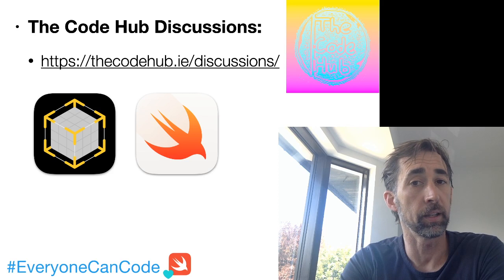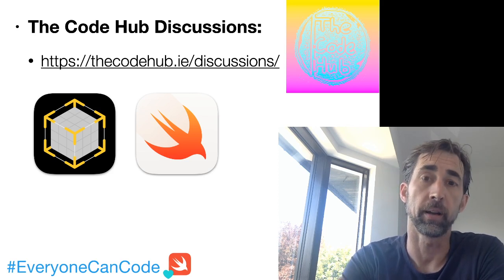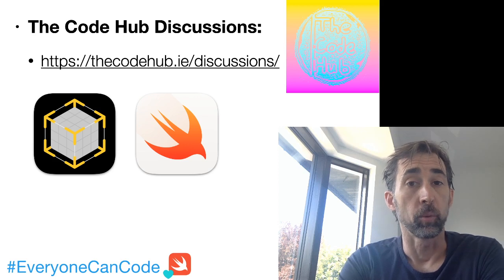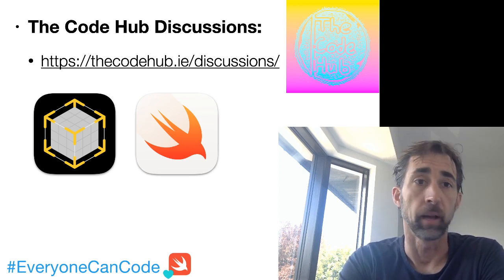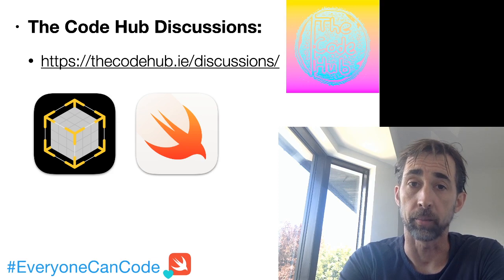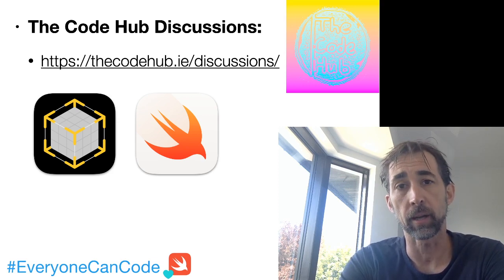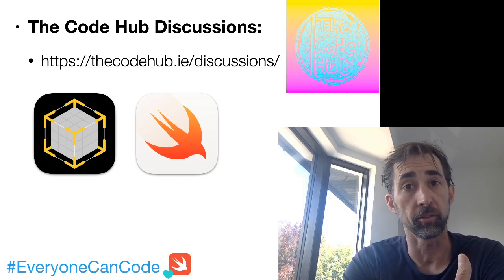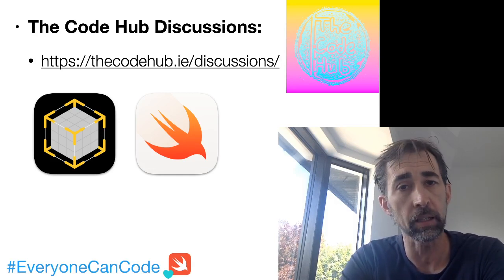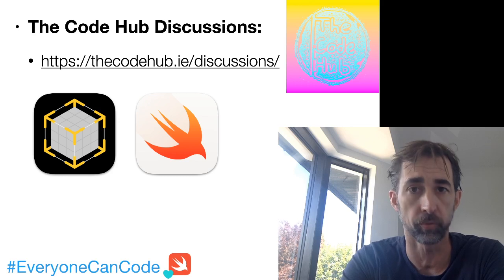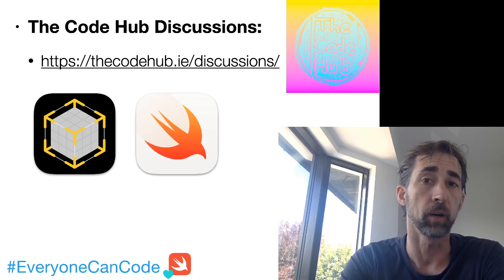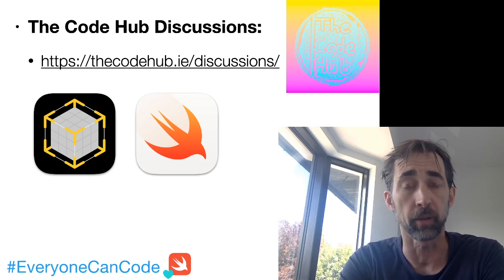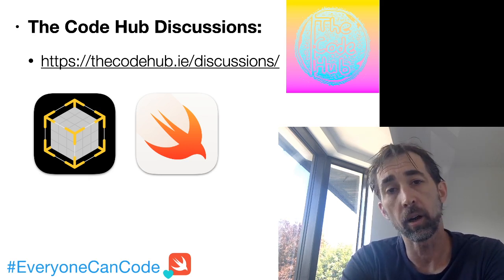We've played around with it a lot for the last few weeks. Last week we kicked into the image anchor capability of Reality Composer, where we can add an image to Reality Composer and choose that as our anchor — where we're going to drop our scene and build our scene around that. On Friday, it was a very packed session where we went through building up almost like a virtual book experience, where you could find the cover of a book.